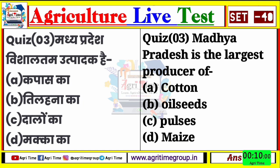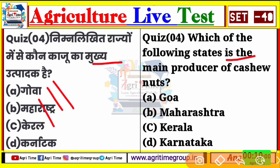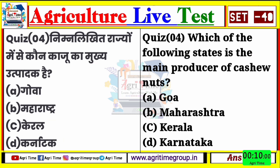यह रहा आपके screen पर - निम्नलिखित राज्यों में से कौन काजू का मुख्य उत्पादक राज्य है? Which of the following state is the main producer of cashew nuts? Options दिये हैं: गोआ, महाराष्ट्र, केरल, या फिर कर्नाटक। Comment करना है आप सभी को - quiz four का right answer क्या होगा?